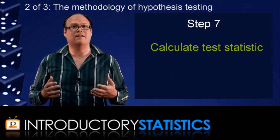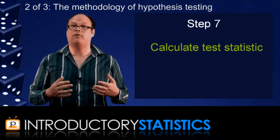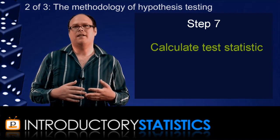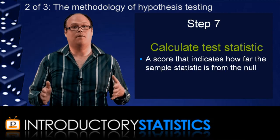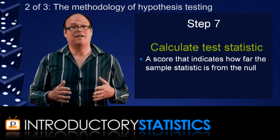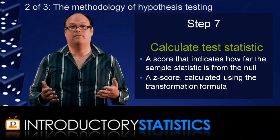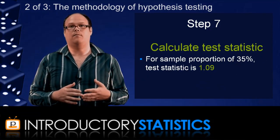Next, you calculate the test statistic. The test statistic is a very important number in your test. It will determine whether or not you have enough evidence to reject the null hypothesis. Put simply, the test statistic is a score that measures how far your sample statistic is from the null hypothesis. To be more precise, it's a z-score for your sample statistic using the transformation formula. For a sample proportion of 0.35, the test statistic is 1.09.